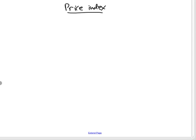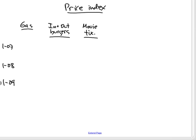Constructing a price index. Let's imagine that all we have is information about how much you spent on three goods: gas, In-N-Out burgers, and movie tickets in three years - let's say three months: January 07, January 08, and January 09.